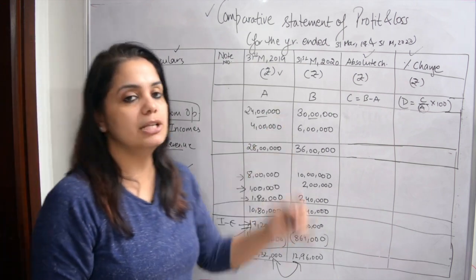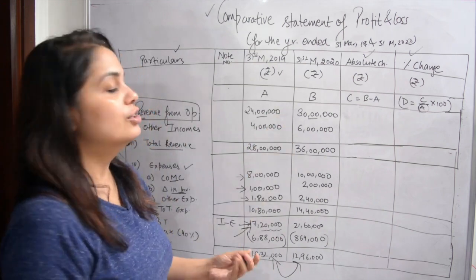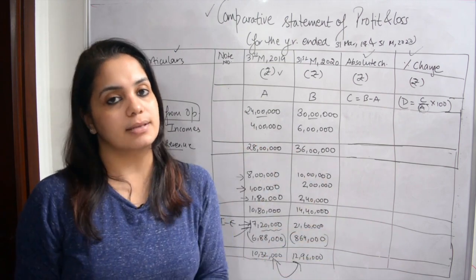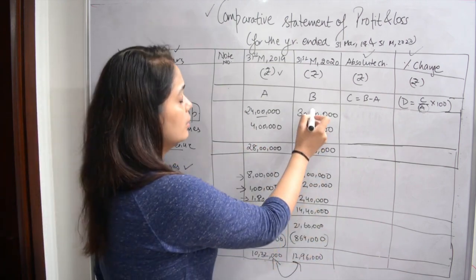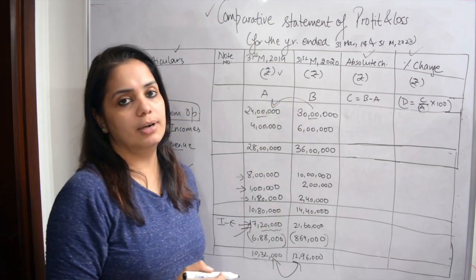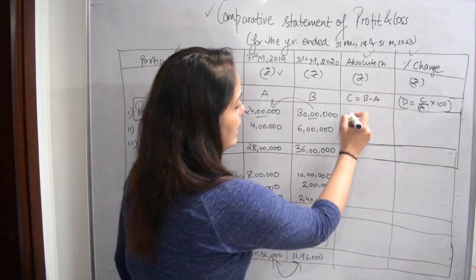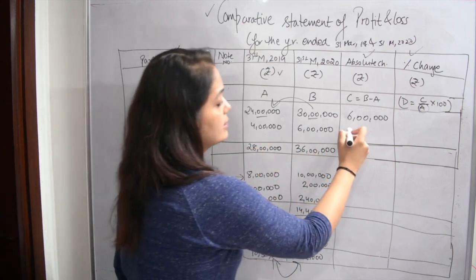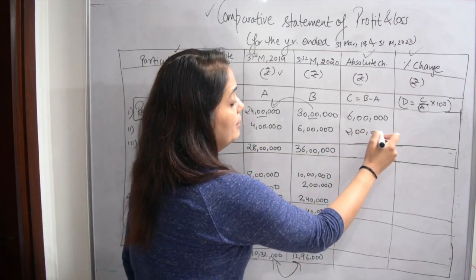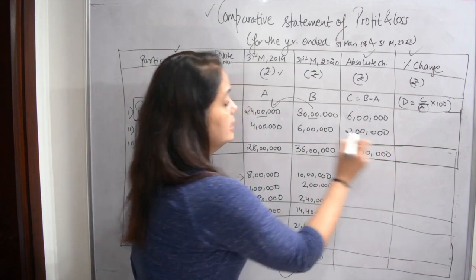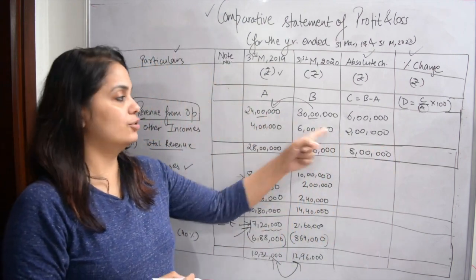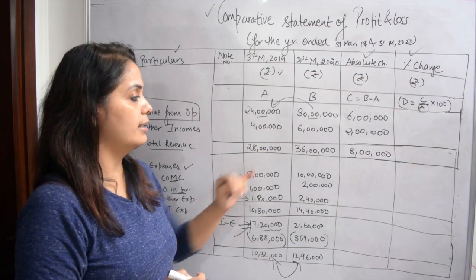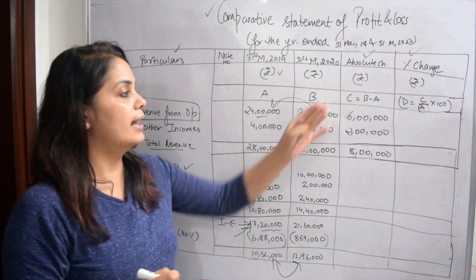Next we calculate absolute change. The formula is: current year figures minus previous year figures. So for revenue from operations: 30 lakhs minus 24 lakhs equals 6 lakhs. For other income: 6 lakhs minus 4 lakhs equals 2 lakhs. So total revenue absolute change is 8 lakhs. All expense line items are similarly computed — for example 10 lakhs minus 8 lakhs equals 2 lakhs, and 2 lakhs minus 1 lakh equals 1 lakh — and totals flow through accordingly.